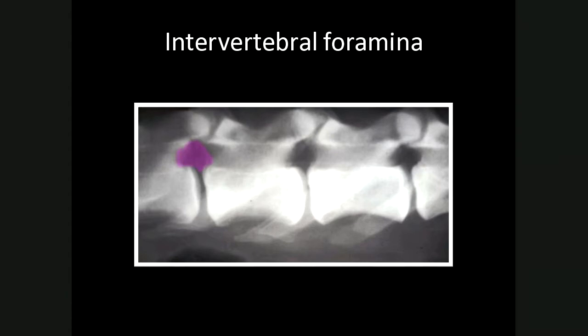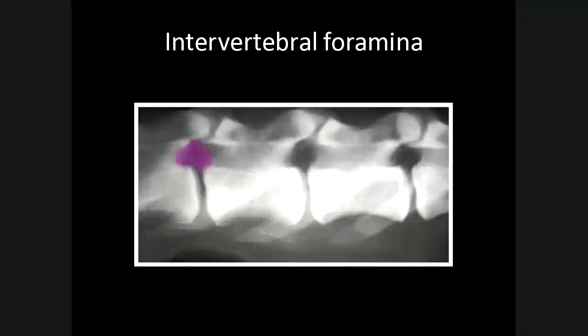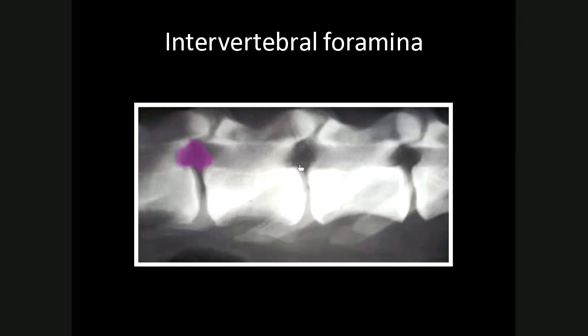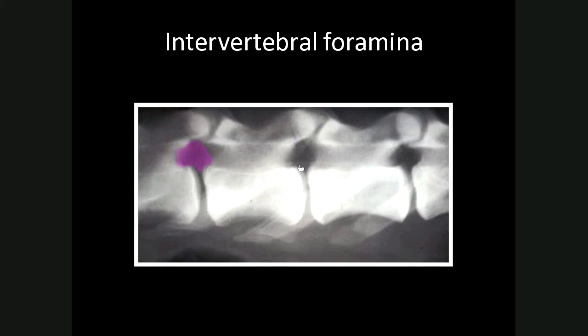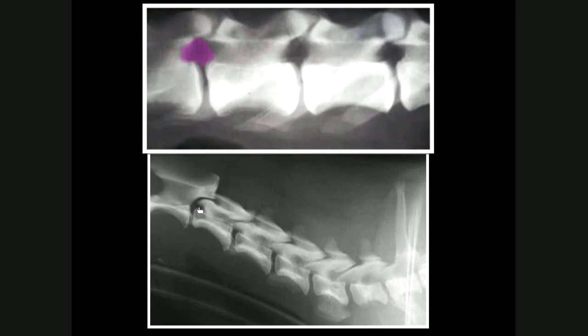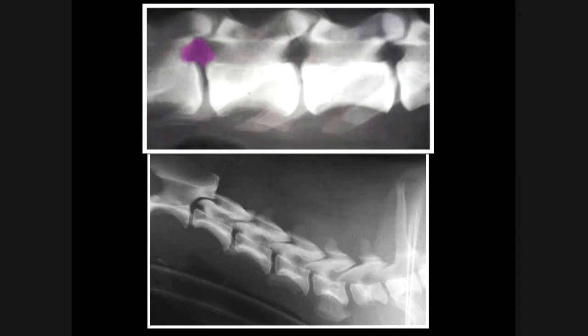The intervertebral foramina are radiolucent areas between the pedicles, essentially a window into the vertebral canal, where the spinal nerves exit. In the lumbar spine they have the appearance almost of a horse's head. In the thoracic spine, these foramina are poorly visualized because the ribs superimpose over them. In the cervical area, they're really not seen except at C2–3, because they open ventrolaterally versus the lumbar spine where they open laterally.